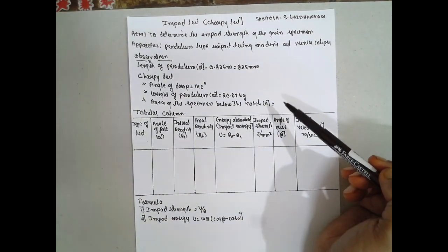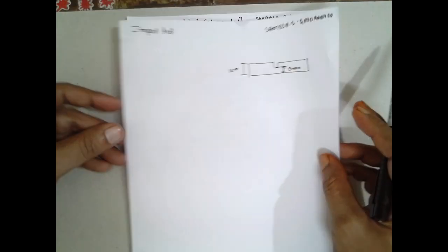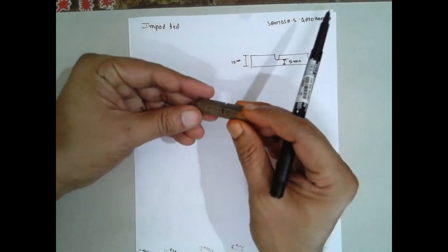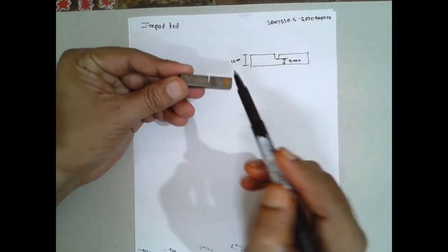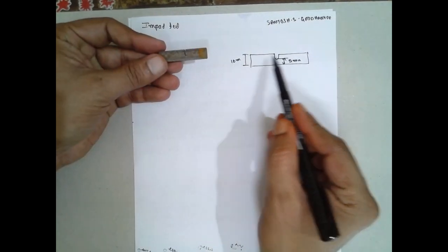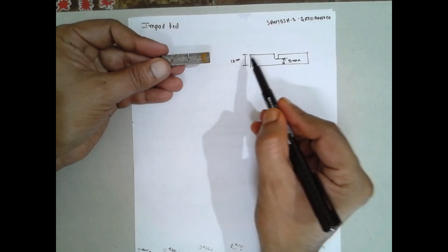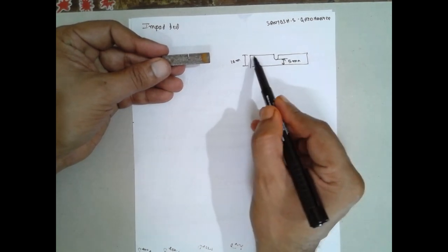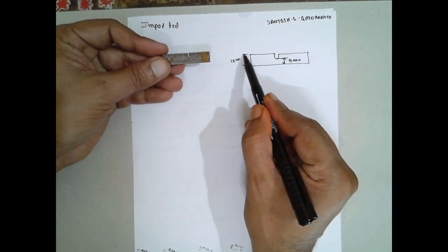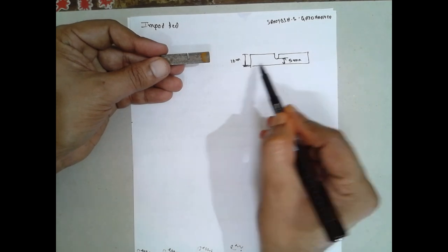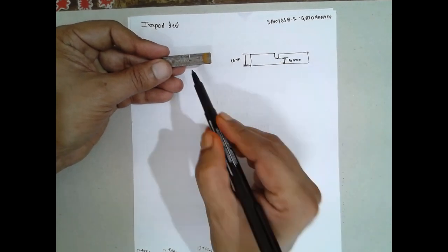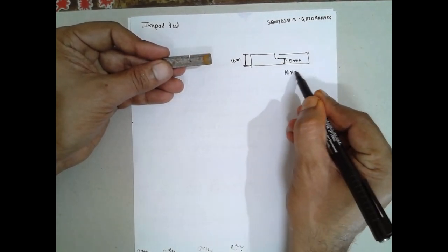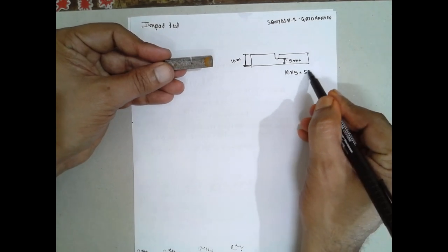The notch is positioned on the specimen as shown in the diagram. To find the area of the specimen below the notch, you measure the relevant dimensions: the width is 10 mm and the depth below the notch is 5 mm. Multiplying 10 by 5 gives an area of 50 mm².